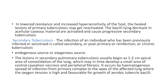The lesions in secondary pulmonary tuberculosis usually begin as a 1 to 2 centimeter apical area of consolidation of the lung, which may in time develop a small area of central caseation necrosis and peripheral fibrosis. It occurs by hematogenous spread of infection from the primary complex to the apex of the affected lung, where oxygen tension is high and favorable for growth.